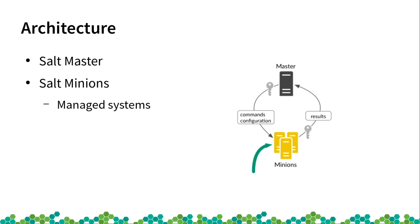How does Salt look? The center of Salt is the Salt master — it's the central node. Everything important happens on this machine. It contains the configuration of all your states, all the files you need, and it manages all the network of clients including authentication. The clients in Salt are called minions — these are the managed systems. They are authenticated using public key cryptography to the master. Communication uses the ZeroMQ bus and is encrypted. Once you approve a minion during registration, you can be sure the communication between them is secure.